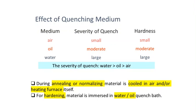Oil has a moderate severity of quenching and gives comparatively higher hardness. Water has very large severity of quenching, so the hardness obtained is very large. If using the furnace as the quenching medium — heating inside the furnace, holding at the operating temperature for sufficient time, then cutting off the heat — the material cools inside the furnace very gradually, giving a much lower cooling rate than air. So ordering severity of quench from fastest to slowest: water, then oil, then air, then furnace cooling.